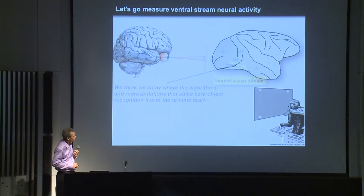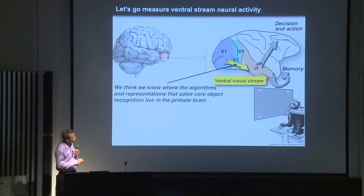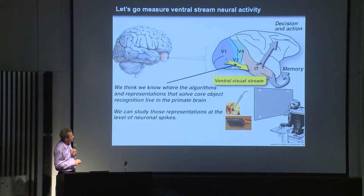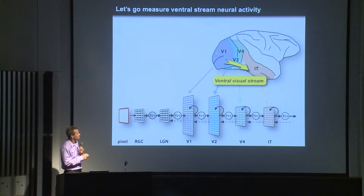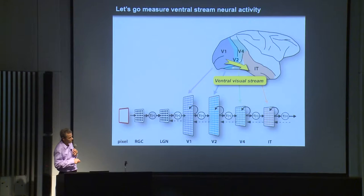This is why we use monkeys — they are very much like humans. The other reason is we know a lot about their visual systems: these regions called the ventral stream, a series of visual areas culminating in IT cortex. Neurons in these areas project to the frontal lobe involved in decision and action, and to the medial temporal lobe involved in long-term memory formation. Because these are monkeys, we can go in and record from neurons and manipulate them — we have a great model of the system we'd like to understand.